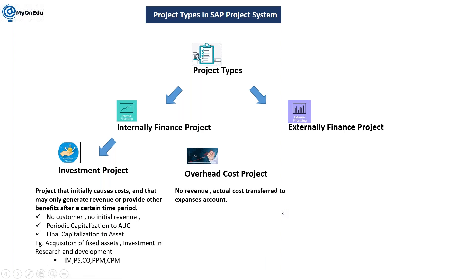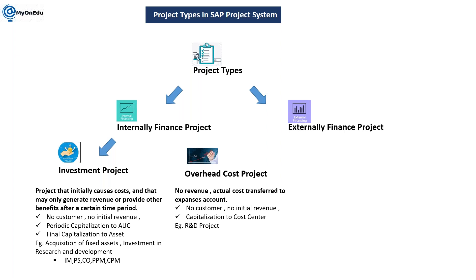What is the difference between internally financed and externally financed? An internally financed project has to be financed by the organization internally. Whenever we are going to execute this kind of project, before executing we need to do a pre-investment analysis — we need to find whether this project will be beneficial for us or not. In SAP there is a specific process to do all these pre-investment analyses.